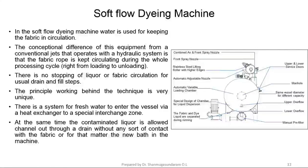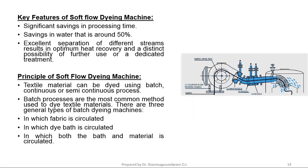In the Soft Flow Dyeing Machine, water is used for keeping the fabric in circulation. There is no stopping of liquor or fabric circulation for usual drains and fill steps. The principle is very unique: there is a system for fresh water to enter the vessel via a heat exchanger to a special interchange zone. At the same time, the contaminated liquor is channeled out through a drain without any contact with the fabric or the new bath in the machine. Key features include saving of processing time and saving of 50% of water. Materials can be dyed either batch-wise, continuous, or semi-continuous process.